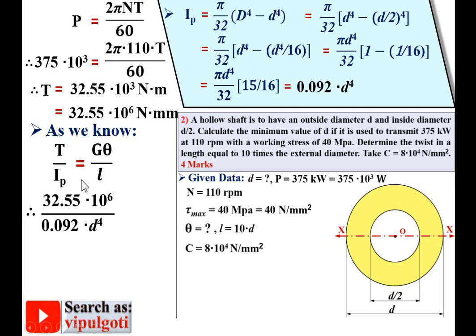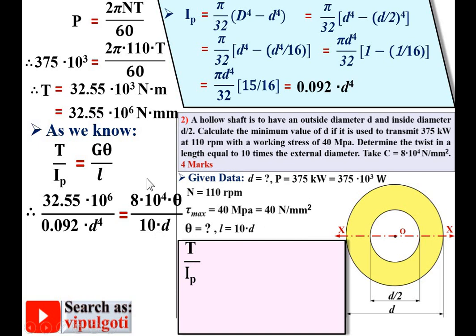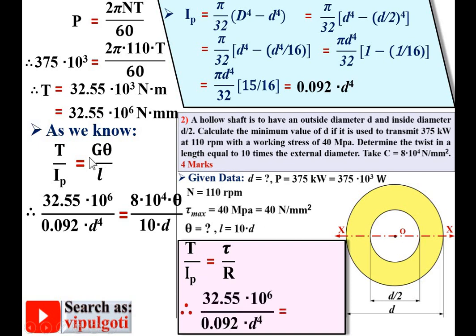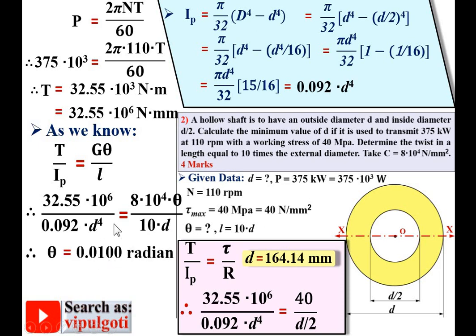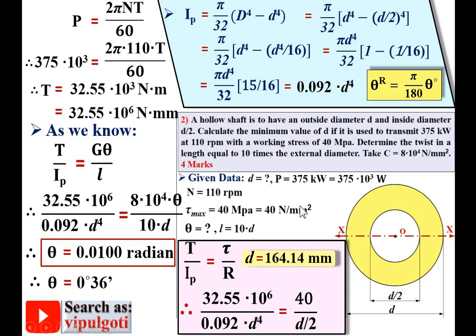Substituting into T / Ip = G·θ / L: 32.55 × 10⁶ / (0.092 D⁴) = (8 × 10⁴ × θ) / (10D). There are two unknowns, θ and D. First find D using T / Ip = τ / r: with T = 32.55 × 10⁶, Ip = 0.092 D⁴, τ = 40 MPa, and outer radius r = D/2. Solving gives the value of D. Substituting D back into the twist equation gives θ in radians. To convert to degrees, use θ_deg = (180/π) × θ_rad.